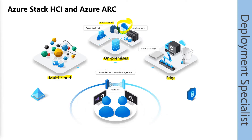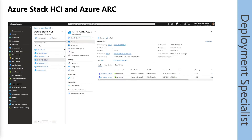Via Azure Arc, we are able to use powerful Azure functionality to configure and manage our on-premises systems. Here is a screenshot showing the view of the Azure Stack HCI cluster in Microsoft Azure. You can see the cluster information, the nodes — both are connected and available. I can configure options, send configurations, and use functionality from the Azure portal to apply to this Azure Stack HCI cluster.